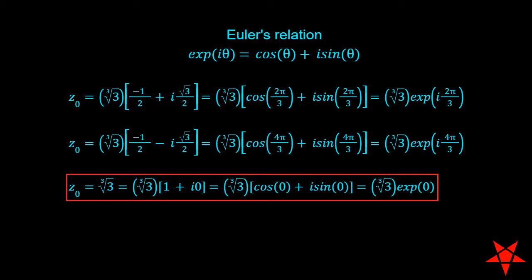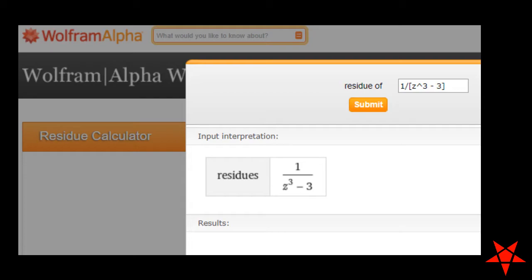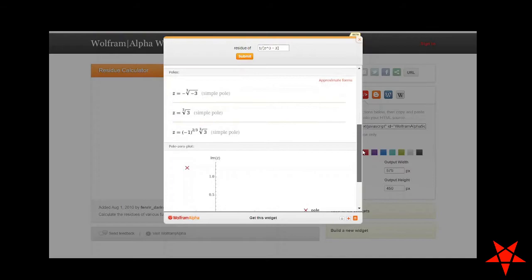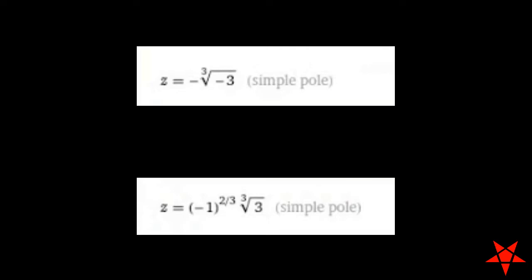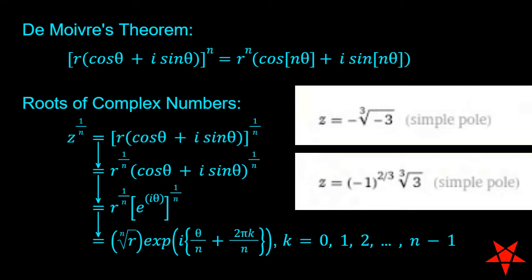This notation will become important later on. Also, if you plug f of z into Wolfram Alpha's residue calculator, you will see that the singular points along with the residues that we'll soon see are represented a little differently than the way that we have described them so far. Still, the singular point on the positive real axis should be easy enough to make sense of. The two complex points, however, are represented in a different manner. If you're interested in playing around with De Moivre's formula and the roots of complex numbers, you will see that the singular points for f of z calculated by Wolfram Alpha match the ones that we just derived.